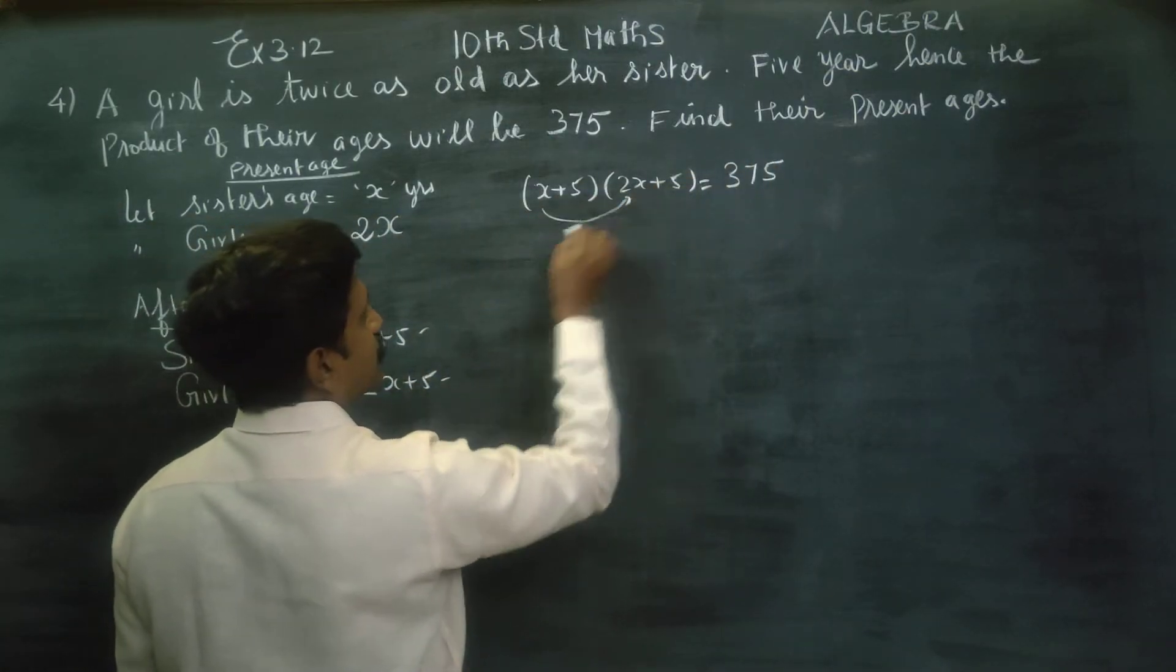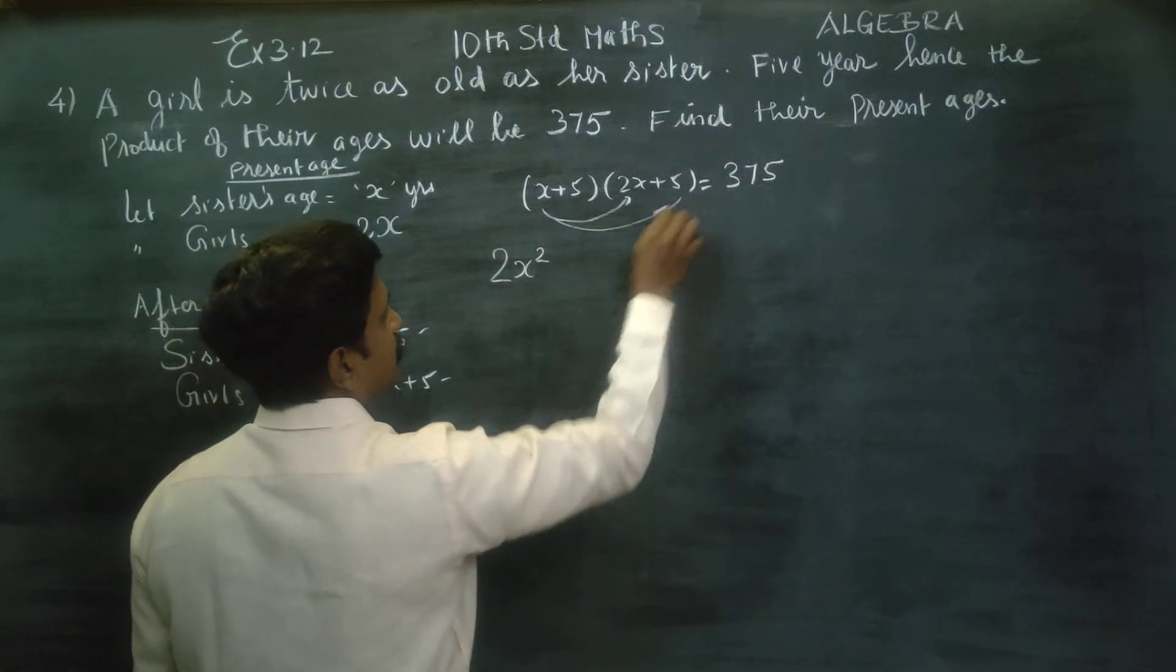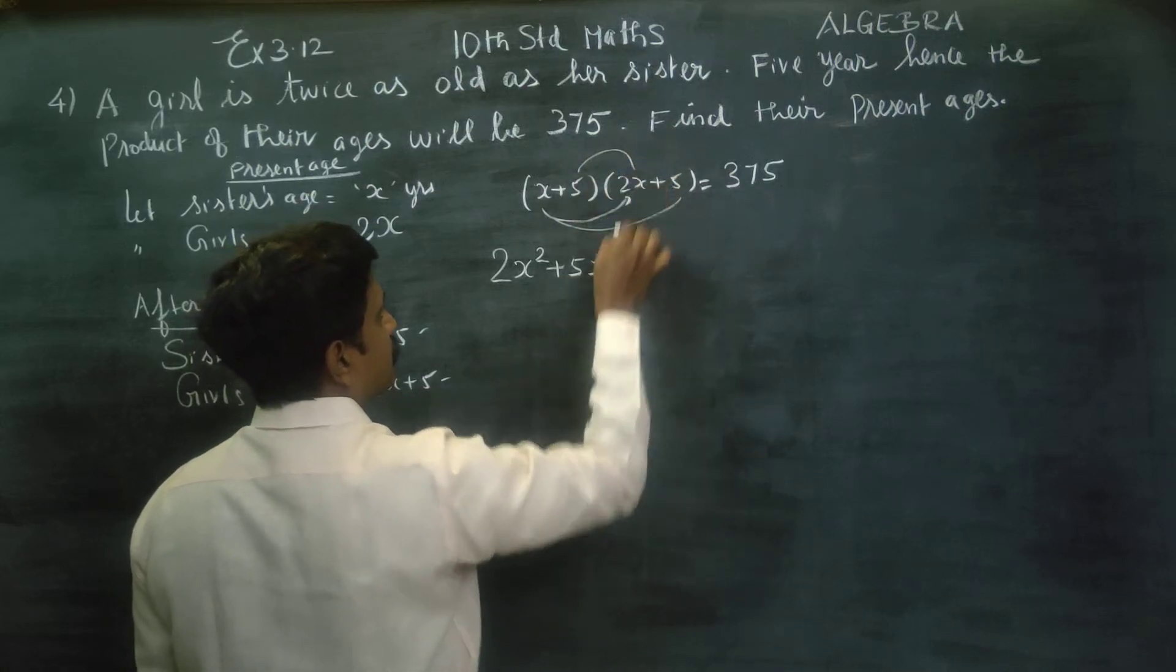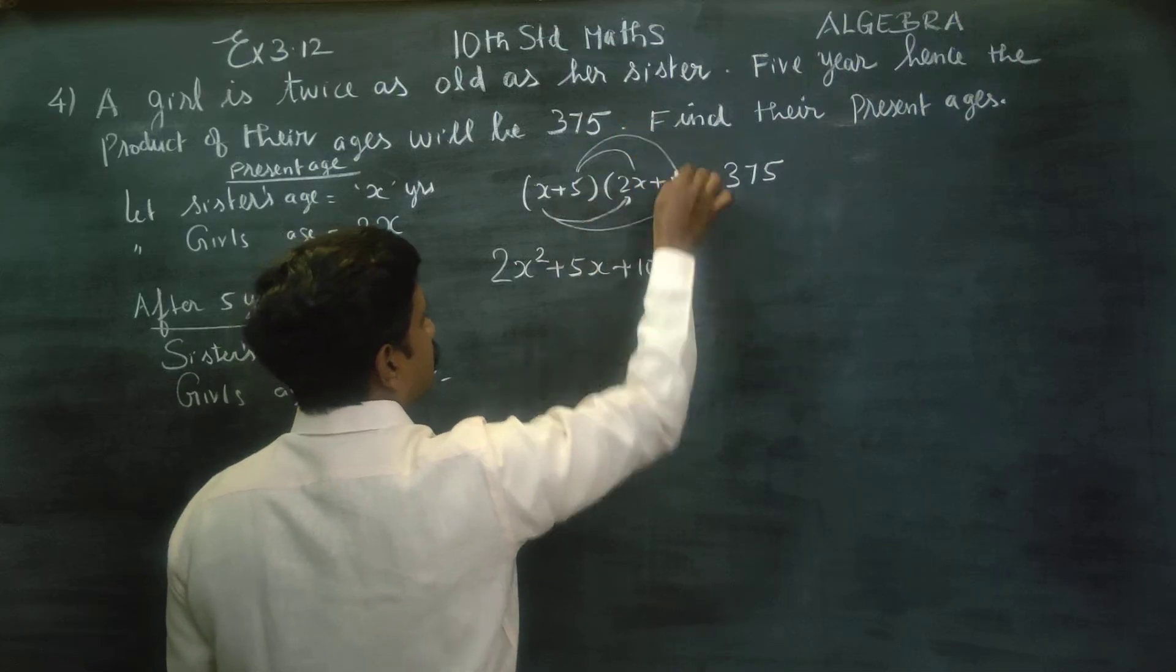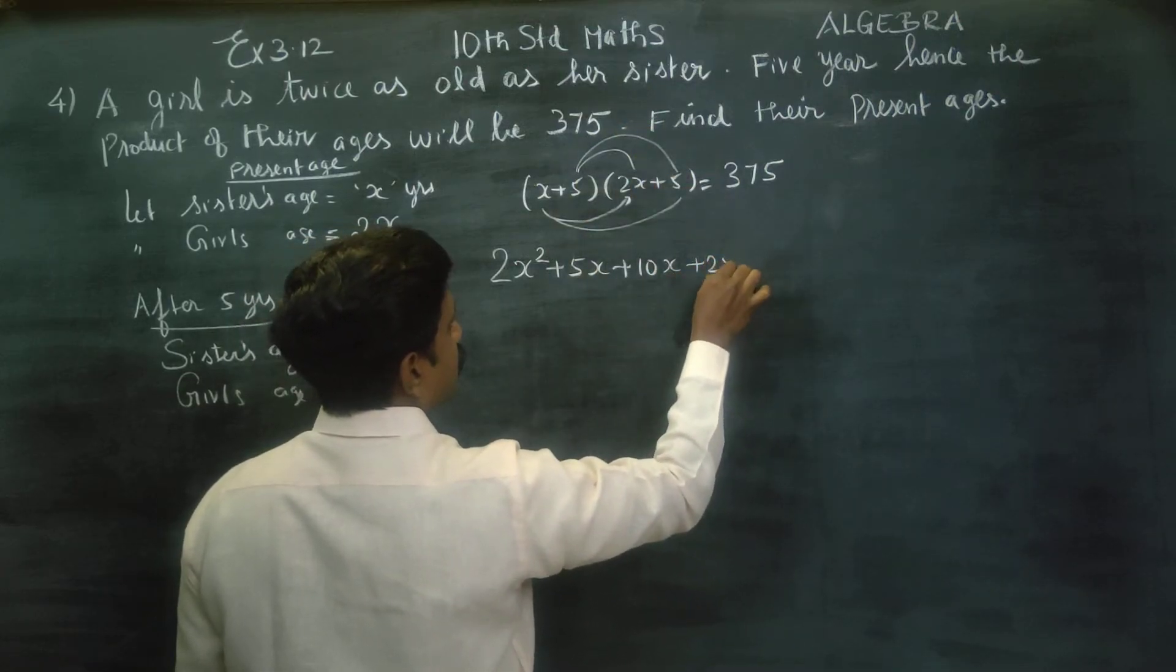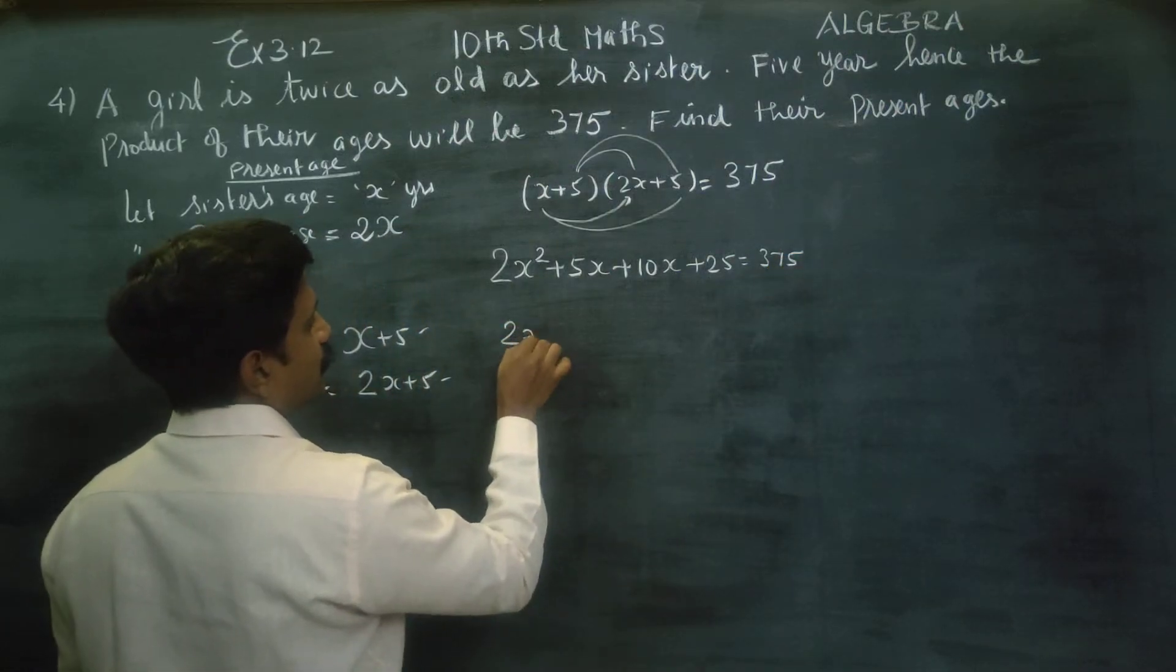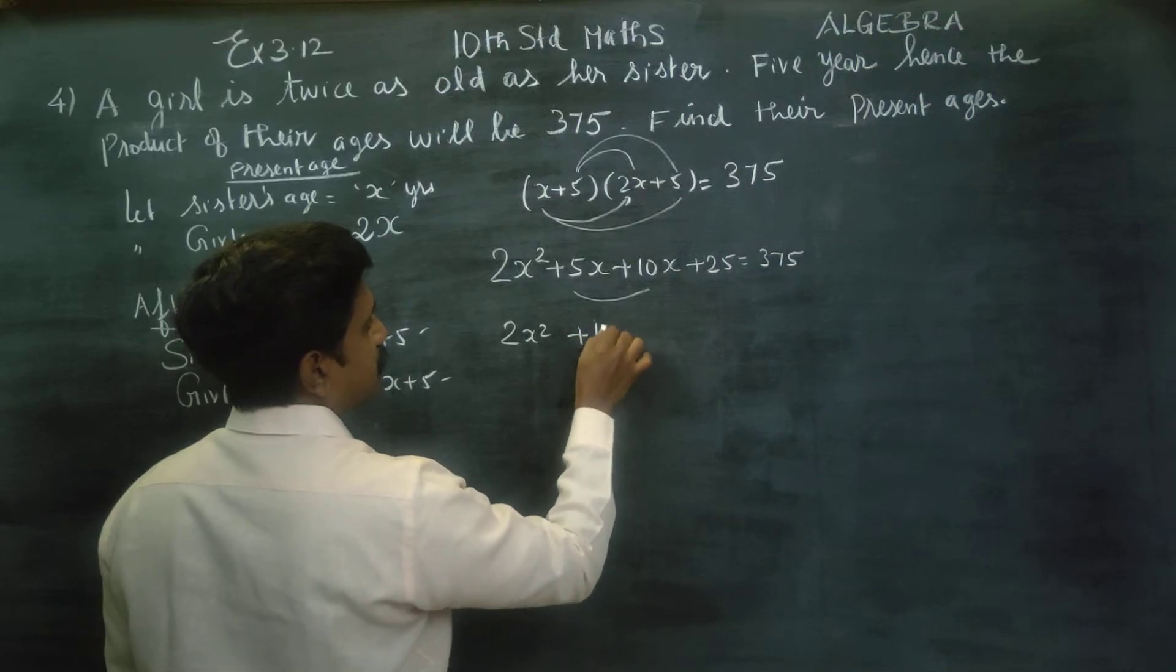First, x I will be getting 2x square. 5x I will be getting, 10x, and 25 is equal to 375. I will be getting 2x square plus 15x.